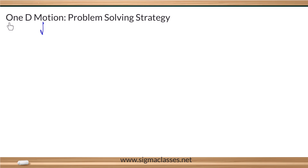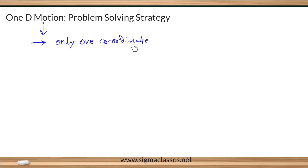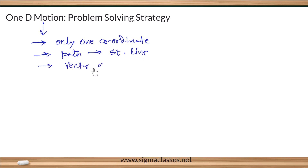What is one-dimensional motion? How do we define it? How many coordinates will change? Only one coordinate will change, and the path is a straight line. In one-dimensional motion, do you deal with a vector or a component of a vector? We deal with the component of a vector.